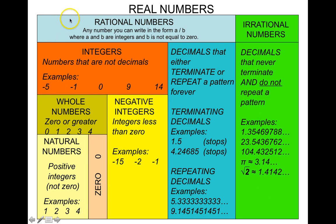Rational numbers are any numbers that you can write in the form of A divided by B, where A and B are integers and B is not equal to zero. Let's talk about one type of rational number: the integers.